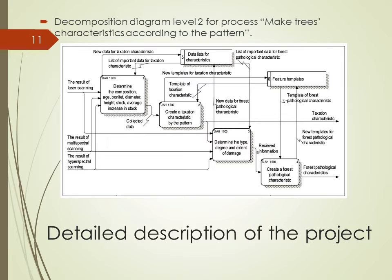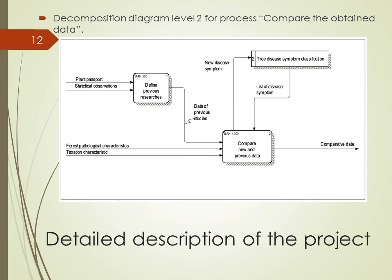This is the decomposition level 2 for the process of making tree characteristics according to the pattern in DFD methodology. The difference from the IDEF0 decomposition methodology is that here the processes return new items to the data stores, such as new data and templates for taxation and pathological characteristics. Here you can also see the decomposition diagram level 2 for the process of comparing the obtained data. This diagram has two processes: the first is to define previous damages, tree states and properties from plant passport and statistical observations. Then the process compares new and previous data by comparing characteristics with plant passport, tree disease symptoms and obtained data of previous studies. It returns new disease symptoms to the data store for tree disease symptom classification, and the output is comparative data.